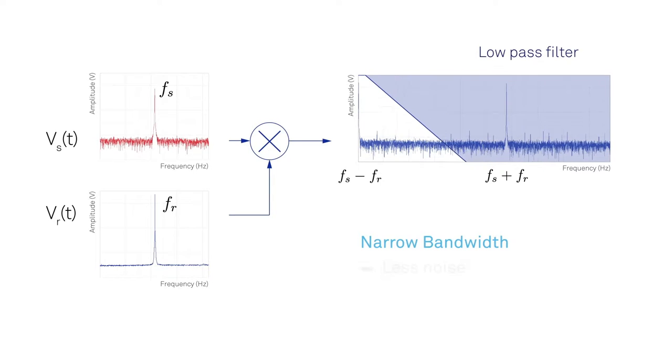On the other hand, choosing a filter bandwidth that is too narrow will limit the time resolution and will slow down the measurements.